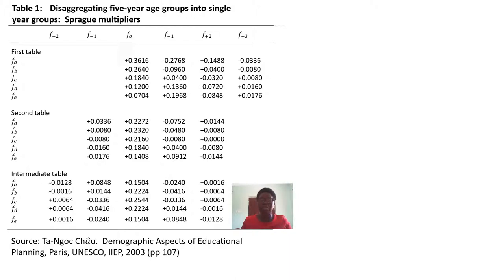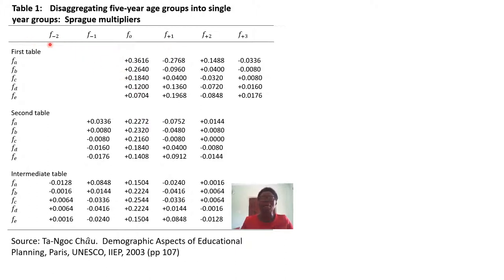We are going to use what we call the Sprague multiplier. This is the Sprague multiplier table which we are going to use. It is adopted from a child demographic aspect of educational planning. We are going to use this table as it is. Now let's look at how the table works. Up here you'll have F minus two, F minus one, F zero, F plus one, and so on across.